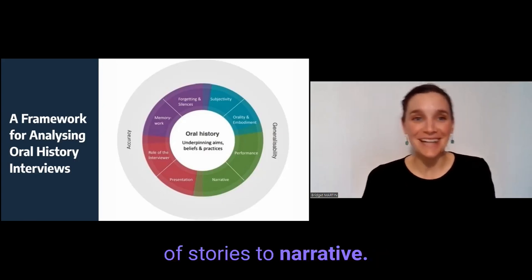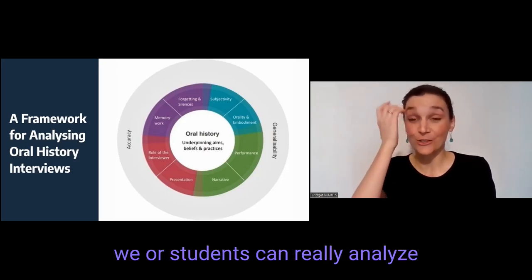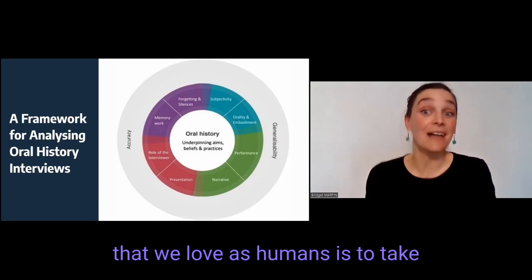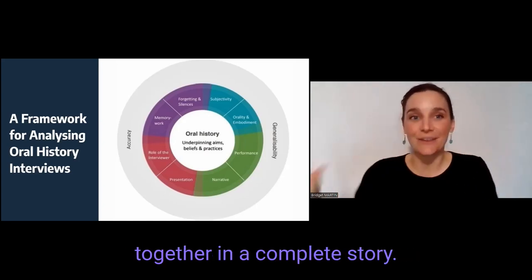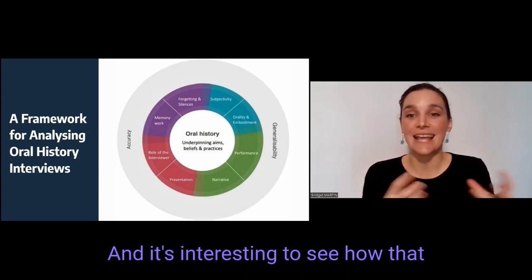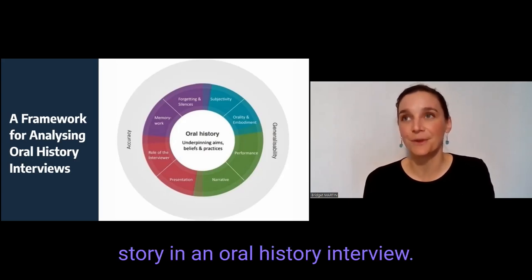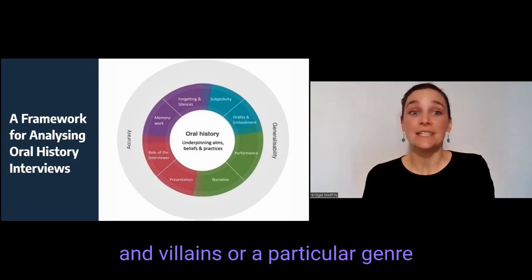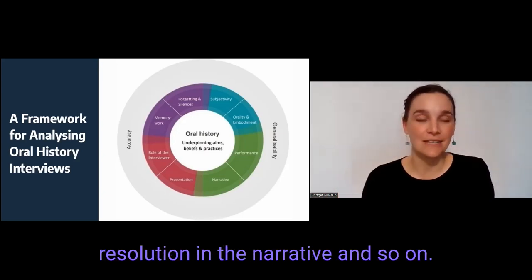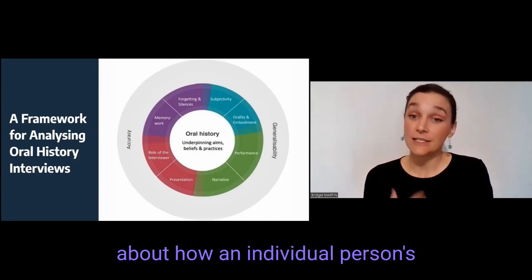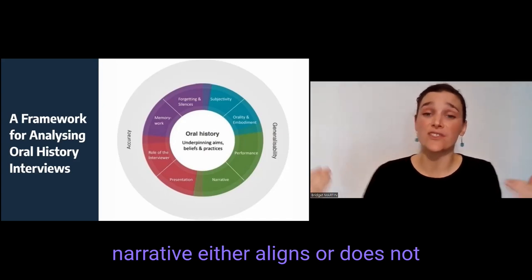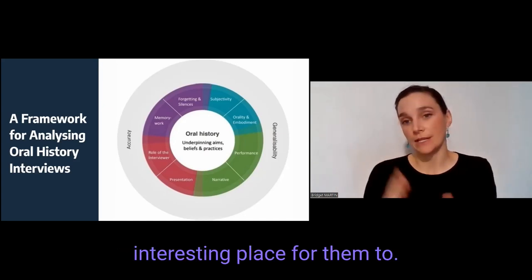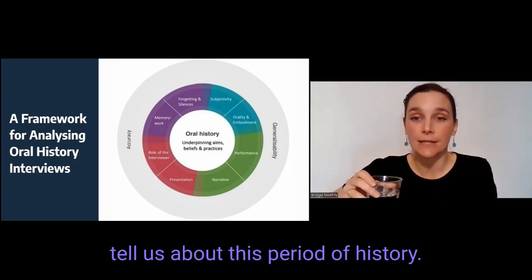That brings us, talking of stories, to narrative. This is another aspect that students can really analyze — what is the flow of the narrative? Narratives are something that we love as humans: taking different elements and putting them together in a complete story. It's interesting to see how that plays out as a person tells their story in an oral history interview — how they might use elements of narrative like heroes and villains, a particular genre, or a complication and resolution. We might also look at how an individual person's narrative either aligns or does not align with other narratives that students might have encountered around this historical event or topic.